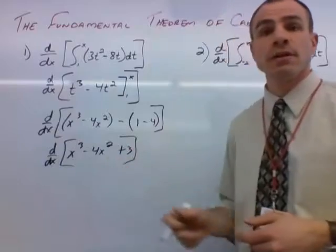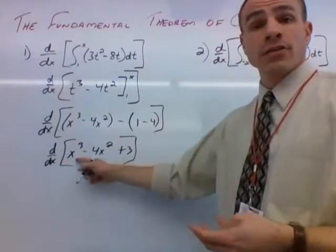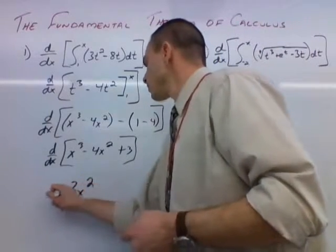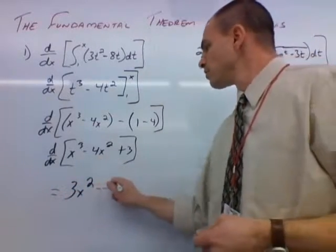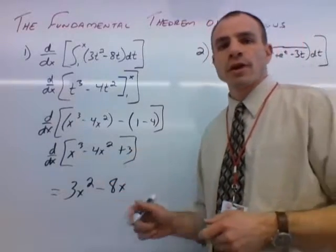And this is a nice, easy derivative to do. We've been doing our rules since forever. So x cubed derives to three x squared. Four x squared derives to eight x, and three derives to nothing.